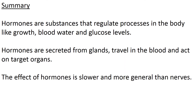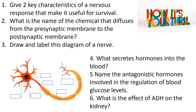To summarize: hormones are substances that regulate processes in the body, like growth, blood water levels, and blood glucose levels. They're secreted from glands, travel in the blood, and act on a target organ. Hormone action is slower than nerve action because it has to journey through the blood from the gland to the target organ, and the effects are more general — for example, adrenaline affects most of the body's systems. I hope that was useful — here are some questions for you. Pause the video now, have a go at these, and then unpause it, and in about five seconds the answers will show up. Thank you very much for listening.